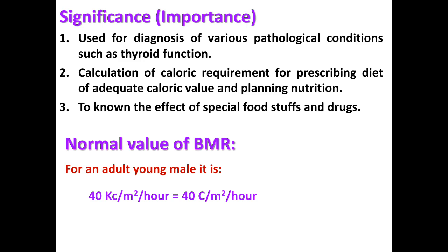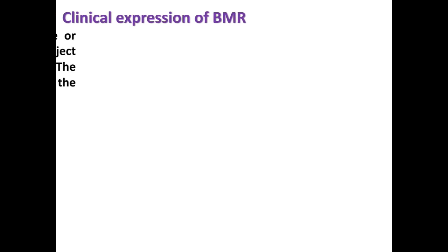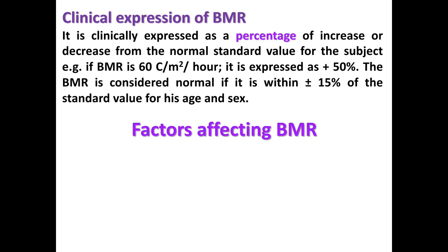The normal value of basal metabolic rate for a young adult male is 40 calories per square meter per hour. Clinically, BMR is expressed as the percentage of increase or decrease from the normal standard value. For example, if BMR is measured at 60 calories per square meter per hour, and the normal is 40 calories, there is an excess of 20 calories above normal. This 20 calories represents 50% of 40, so it is expressed as +50%.